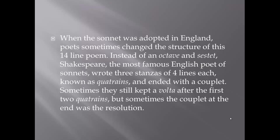When the sonnet was adopted in England, poets sometimes changed the structure of this 14-line poem. Instead of an octave and sestet, Shakespeare — the most famous English poet of sonnets — wrote three stanzas of four lines each, known as quatrains (qua is a prefix for four), and ended with a couplet — the word couple meaning two, so that's two lines. Sometimes they still kept a volta after the first two quatrains, but sometimes the couplet at the end was the resolution.